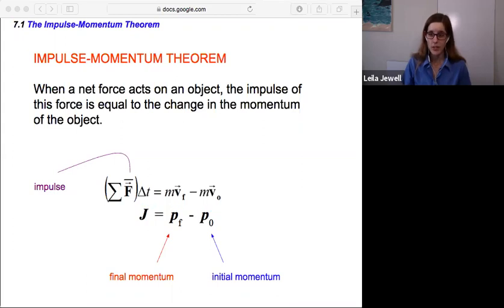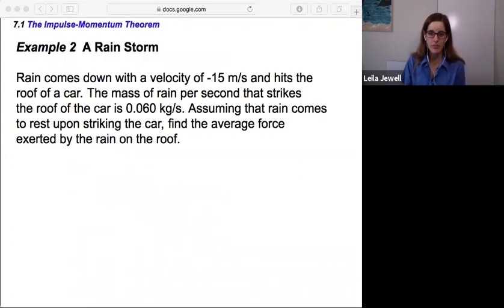So this introduces the idea we're going to see a lot more with momentum to come. But first, let's take a look at an example. An example of a rainstorm. Rain comes down with a velocity of negative 15 meters per second and hits the roof of a car. The mass of rain per second that strikes the roof of the car is 0.060 kilograms per second. Assuming that rain comes to rest upon striking the car, find the average force exerted by rain on the roof.